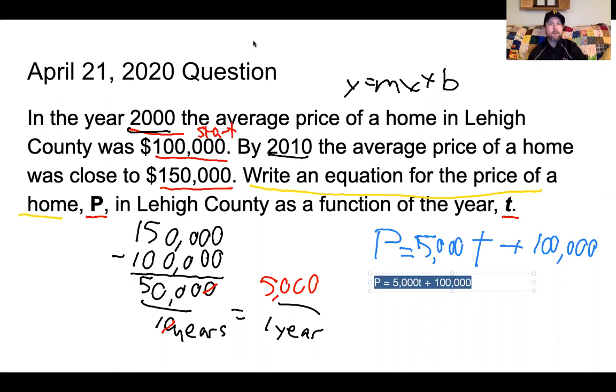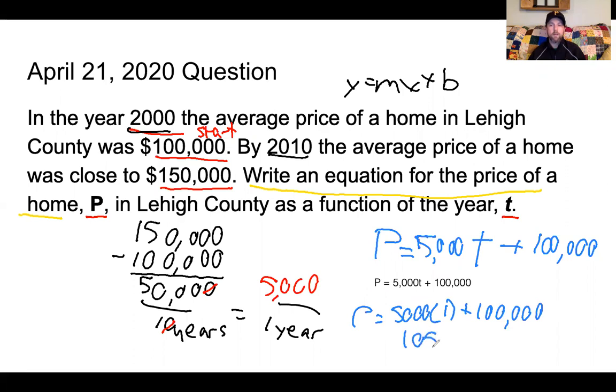So I know that no matter what year it is, if it's going by this same function, that as the number of years increases for each year that we go past the year 2000, that price is going to increase by $5,000. So for the year 2001, since that increased by one year, my price would be, if I input the year 2001, P equals $5,000 times one plus $100,000, or the price would be $105,000.